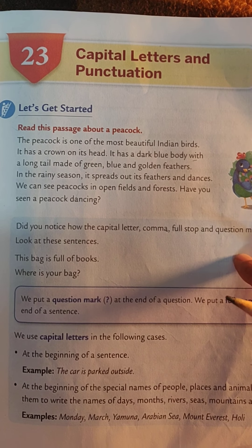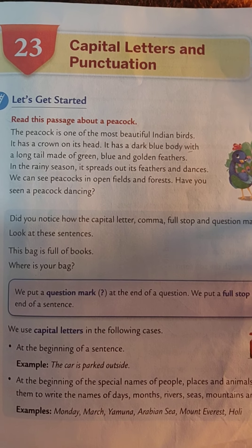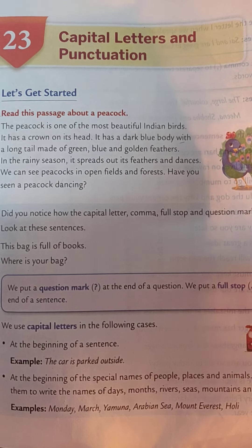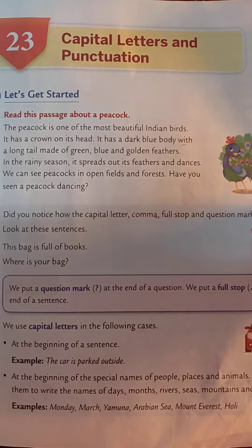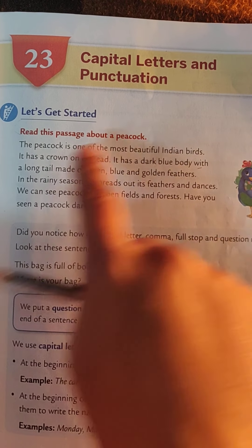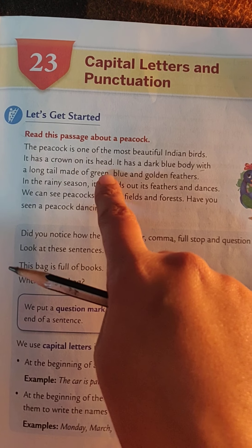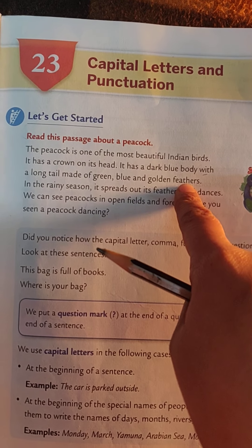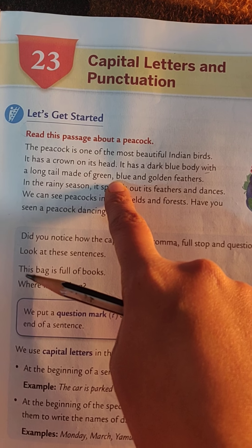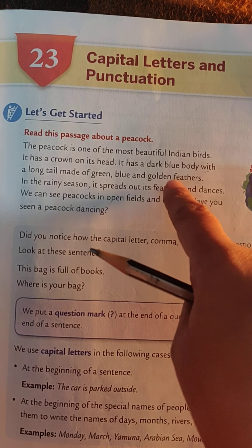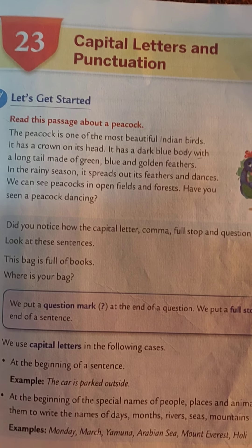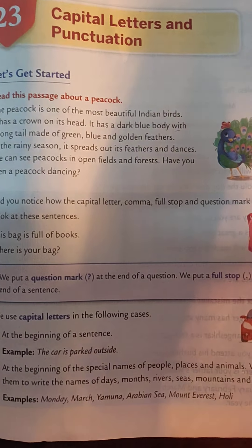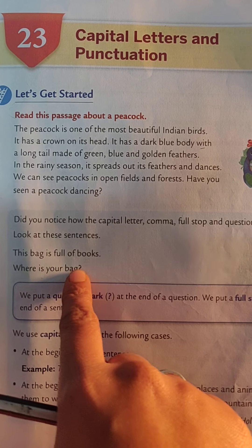When you talk about many things in a sentence — like 'it has a dark blue body with a long tail made of green, blue, and golden feathers' — we use a comma because we are talking about many colors in the same sentence. We use a question mark when we ask questions: 'Where is your bag? Where are you going? How are you?'